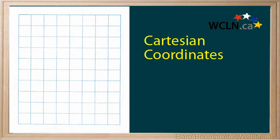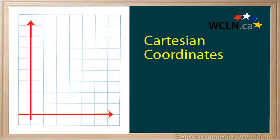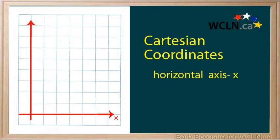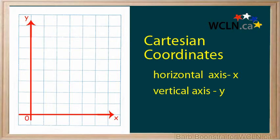Using Cartesian coordinates, we mark a point on a graph by how far along and how far up it is. The left-right horizontal direction is called x. The up-and-down vertical direction is called y. The x-axis and the y-axis cross over at the zero point. We measure everything from there.